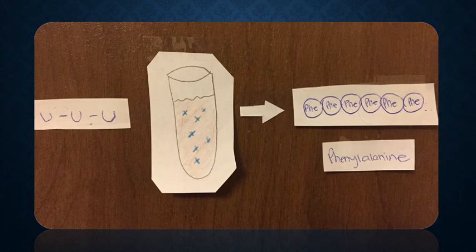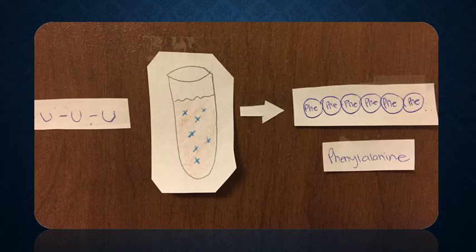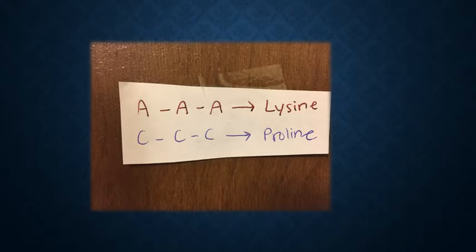So Nirenberg and Matthaei did the same experiment except with poly-A and poly-C. And they discovered that the codon AAA is coded for lysine, and the codon CCC is coded for proline. But what about codons with different bases like CUA, GCG, and so on?